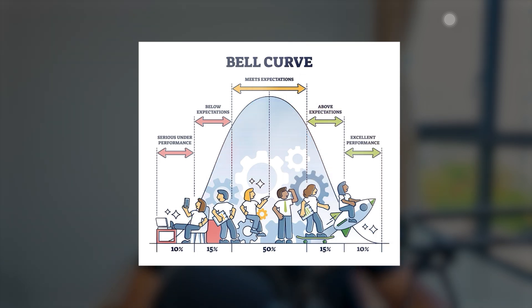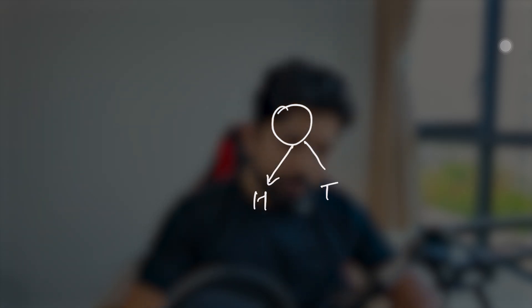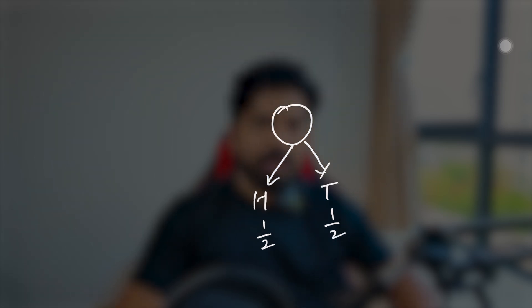Let's say you toss a coin — there are only two possible outcomes: head and tail. The probability is one-half for each outcome. And when you roll a dice, there are six possibilities — one, two, three, four, five, and six — and each one has probability one-sixth. These are examples of discrete data.